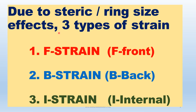Good morning. In this class, we will study about I-strain. I refers to internal — what is called I-strain. We have previously studied that due to steric effect, bulky substituents cause strain. There are three types of strain that affect Lewis acid-base strength: F-strain (front strain), B-strain (back strain), and internal strain or I-strain.